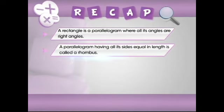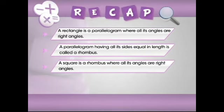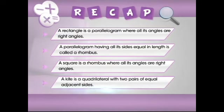A parallelogram having all its sides equal in length is called a rhombus. A square is a rhombus where all its angles are right angles. A kite is a quadrilateral with two pairs of equal adjacent sides.